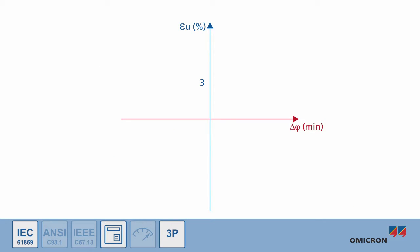3P is an example of an IEC protection class. Within the operating range, the error of a 3P voltage transformer must not exceed 3% in amplitude and 120 minutes in phase.